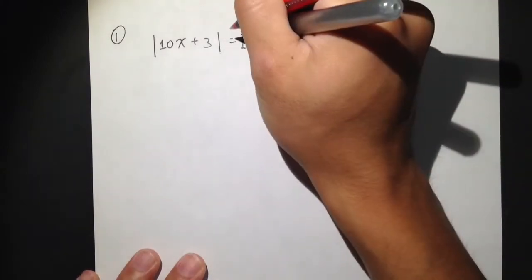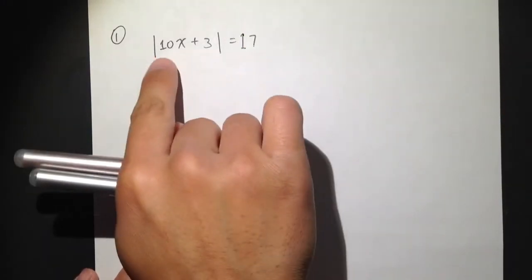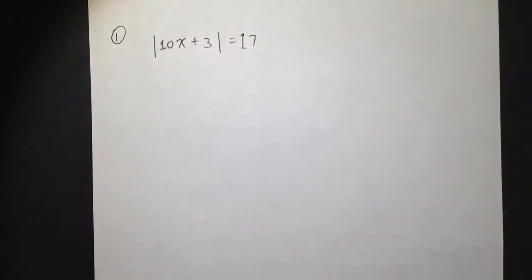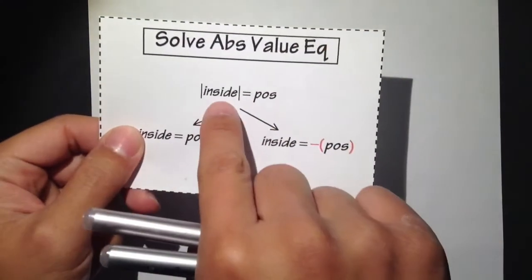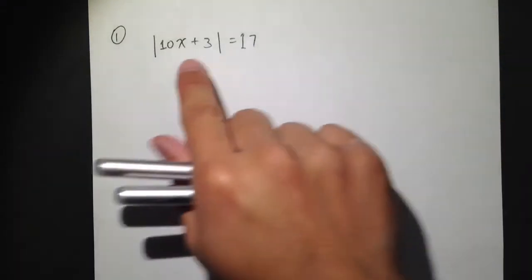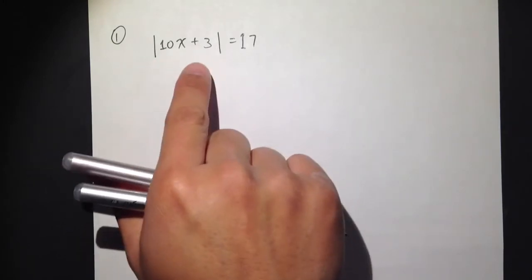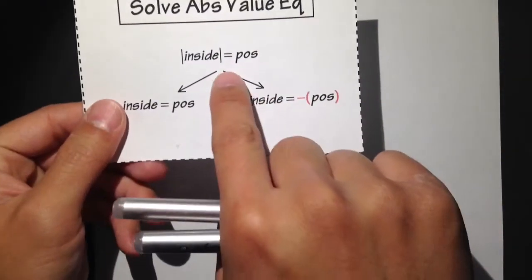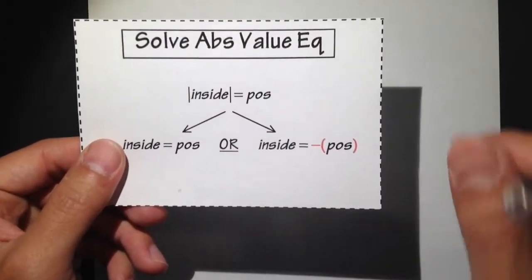In this case, we already have the absolute value by itself on the left-hand side. So we can just go ahead and split into two different equations.